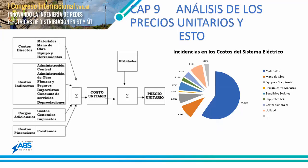Después está lo que conlleva determinar cuánto costará el estudio de un proyecto de electrificación rural. Tenemos un análisis de precios unitarios con costos directos, costos indirectos, cargos adicionales y costos financieros. De eso sale un costo unitario; a ese costo unitario se le coloca la utilidad y de ahí sale el precio unitario. Se saca el precio unitario de cada ítem con sus incidencias y se llega a un presupuesto general. La mayor parte de esas incidencias corresponde a los materiales, seguido de mano de obra, equipos y maquinarias, herramientas menores, beneficios sociales, impuestos, gastos generales y la utilidad.